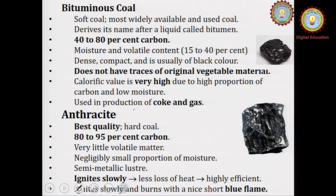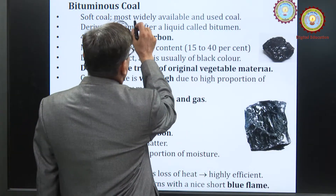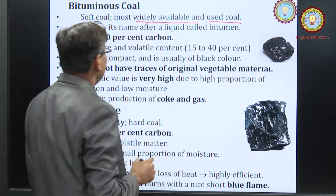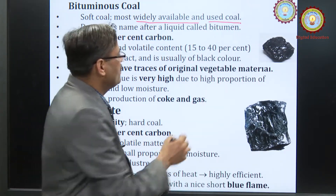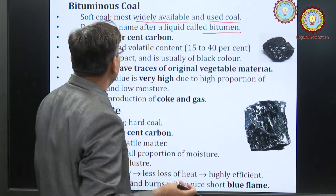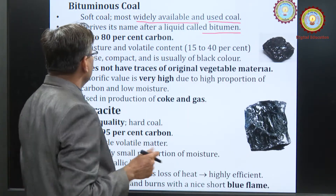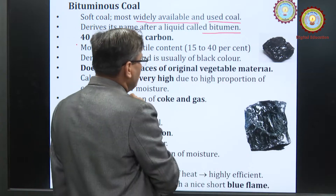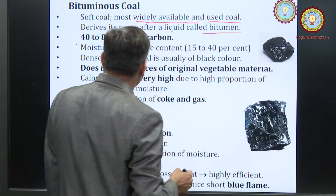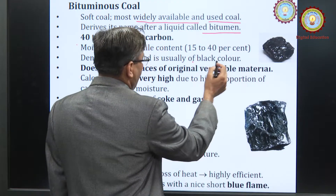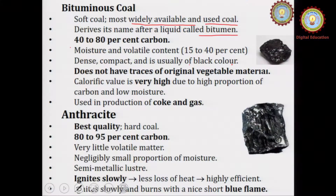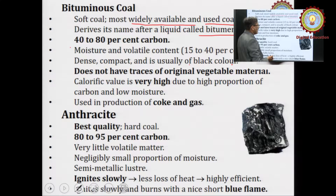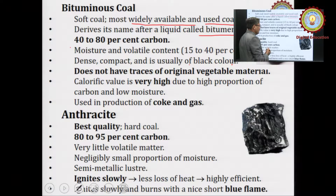Bituminous coal is a soft quality of coal and is mostly available and used. Its name is derived from the term bitumen, which is a liquid form of carbon. It contains about 40 to 80 percent carbon, moisture content and volatile content of 15 to 40 percent, and is dense, compact and usually black in color. It does not have traces of original vegetable material. Calorific value is very high due to high proportion of carbon and low moisture, and it is used in production of coke and gas.